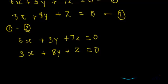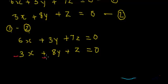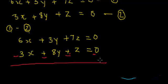Since we are subtracting the second equation from the first, the signs of the second equation will change. 3x has no sign before it, meaning it is positive, so when subtracting it becomes negative. The positive sign before 8y also becomes negative 8y. Similarly, the plus sign before z also gets converted to negative. On the right-hand side, both are zero, but the sign change procedure still applies.